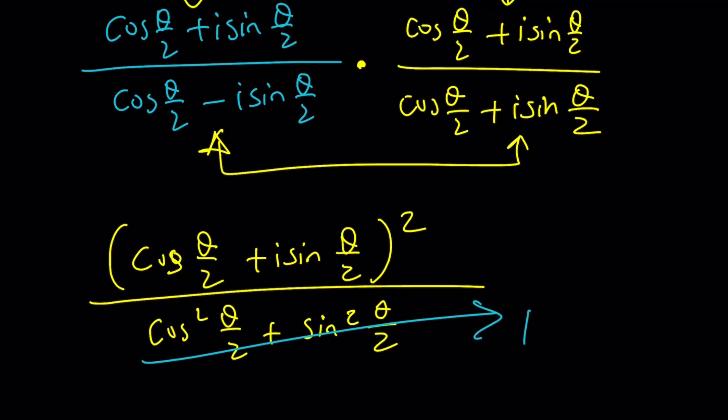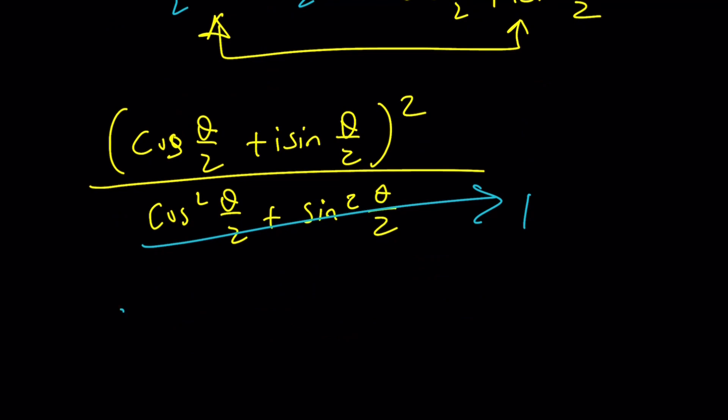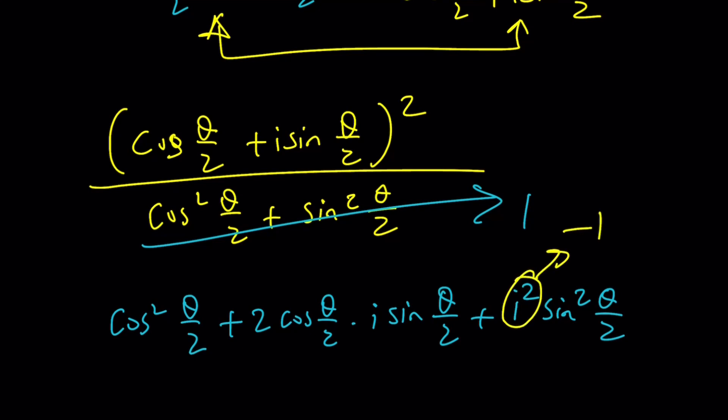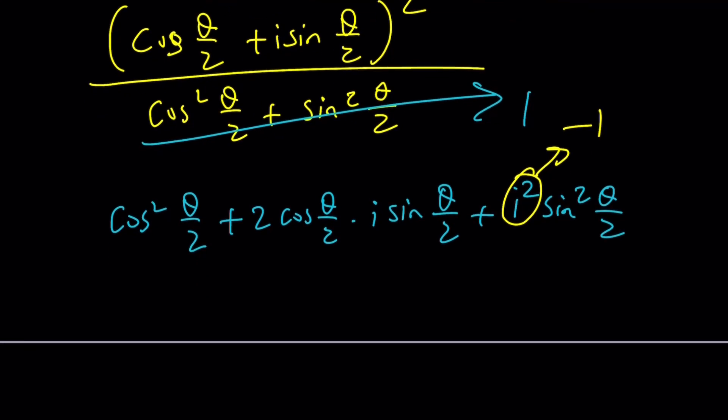But how do you square this? Let's just square it. Cosine squared theta over 2 plus 2 cosine theta over 2 times i sine theta over 2 plus i squared sine squared theta over 2. Remember, I've always told you i squared is negative 1. So we get a minus sine there.